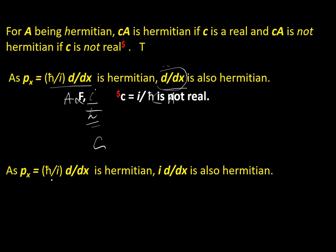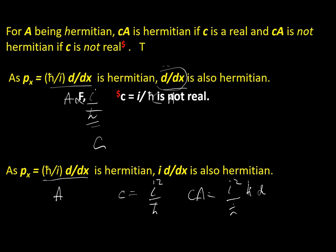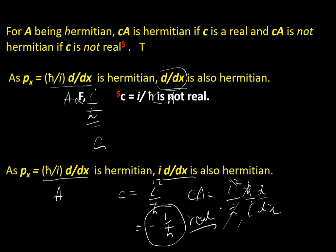Another question: if p_x = ℏ/i · d/dx is Hermitian, is i·d/dx also Hermitian? Here c = i²/ℏ = −1/ℏ, which is real. So c·a = (i²/ℏ)·(ℏ/i · d/dx) = i·d/dx. Since c = −1/ℏ is real, i·d/dx is Hermitian. The statement is TRUE.